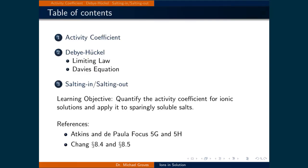This lecture will be broken down into three parts. In the first part, we will define the activity coefficient gamma for ions in solutions. In the second part, we will use two versions of the Debye-Hückel laws to calculate the activity coefficient for ionic solutions, and then apply it in the third part to see how the activity coefficient affects the solubility of ions.